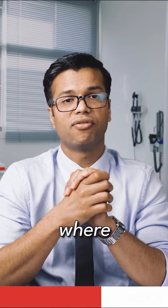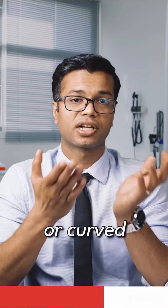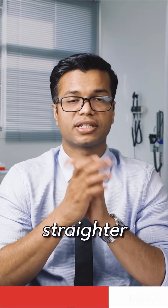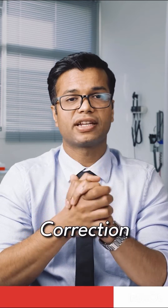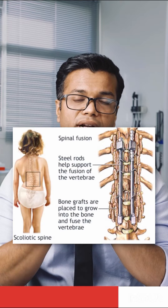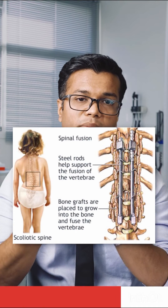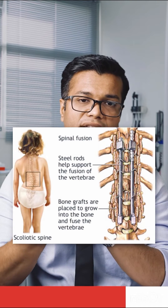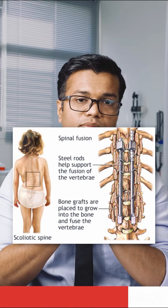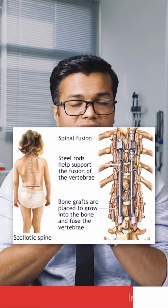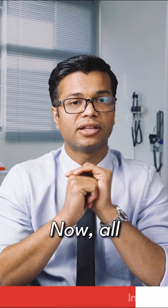Deformity correction surgery, where a bent or curved spine is aligned to a straighter position. Screws and rods are put to correct a curved or bent spine and bring it as close to the natural alignment as possible. This is scoliosis or kyphosis correction surgery.